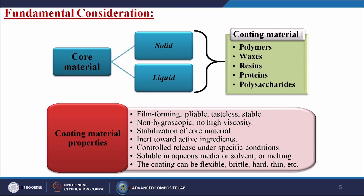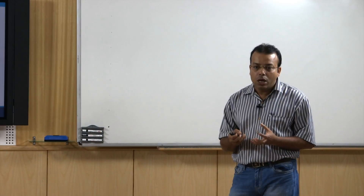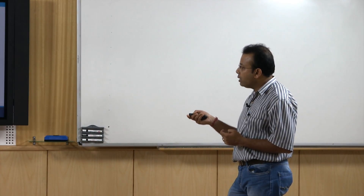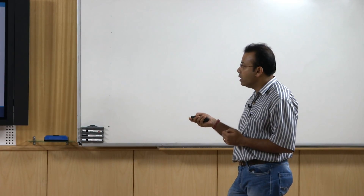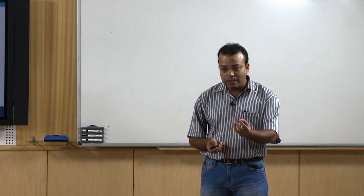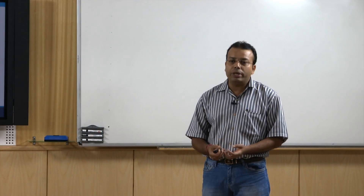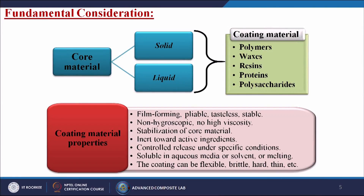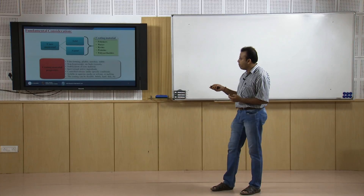When choosing coating materials, we consider these properties: film forming, pliable, tasteless, and stable; non-hygroscopic; no high viscosity; stabilization of the core material so it cannot change with environmental conditions; inert toward active ingredients — it should not react with acids or bases inside the body; controlled release under specific conditions — only when the exact environment is encountered will it activate; and solubility in aqueous media or solvent, with the coating being flexible, brittle, hard, or thin as required.